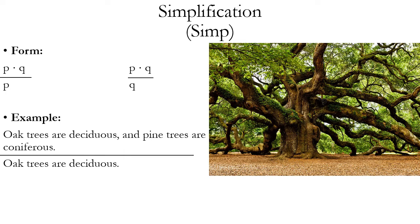Simplification is a rule that lets you move from a conjunction to one of the conjuncts. There are two versions of it. One derives the first conjunct P from the conjunction P dot Q, and the other derives the second conjunct Q from the same conjunction. So you can do either one with this rule.